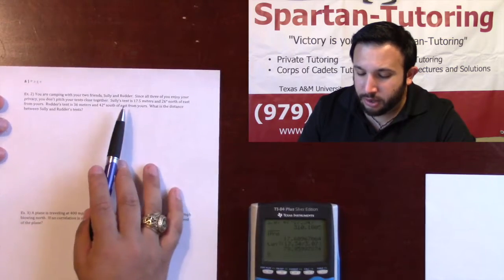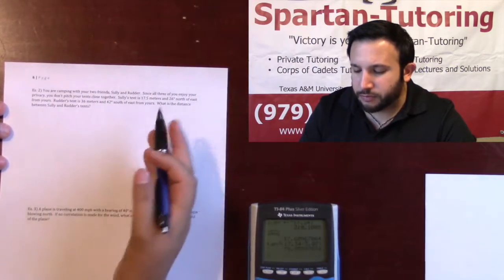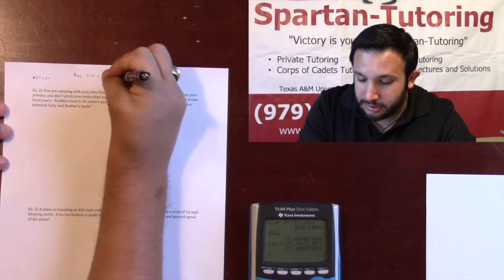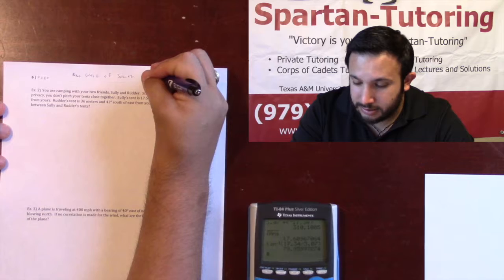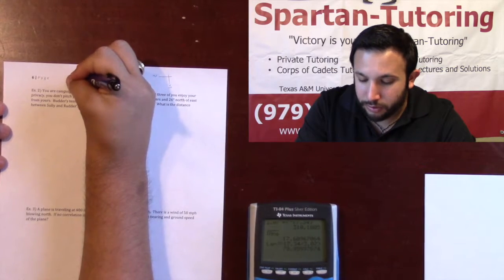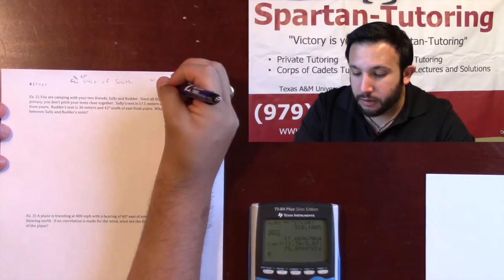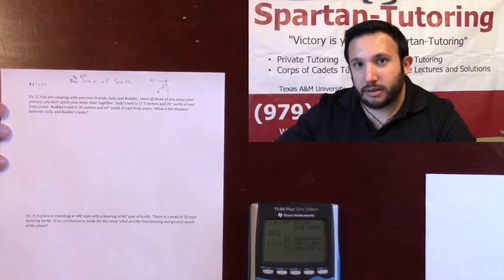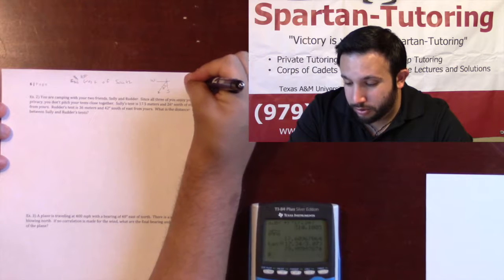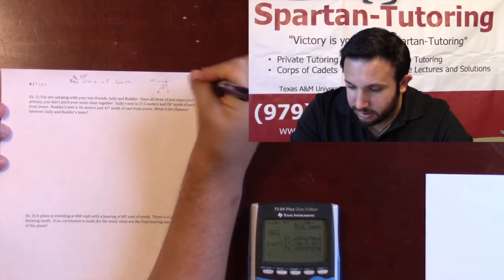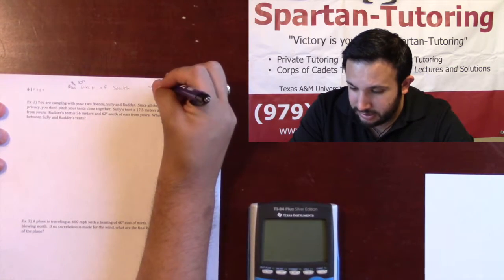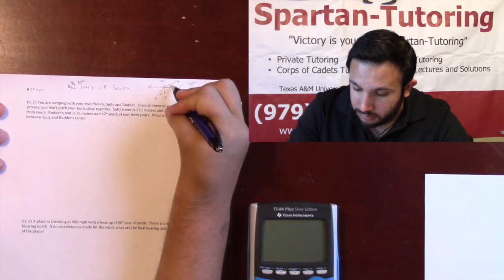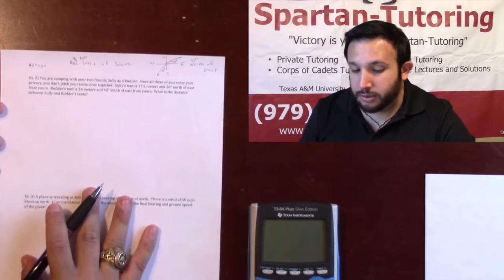Let's first understand what 'north of east' and 'south of east' mean. Let's try 'west of south' as an example. West is out here and south is right there. For 10 degrees west of south, you start at south and literally go 10 degrees west of that. Similarly, for 10 degrees north of east: here's east, here's north — if I start at east, I go 10 degrees north of east. That's how these directions work.